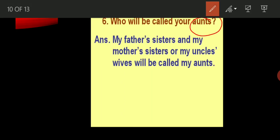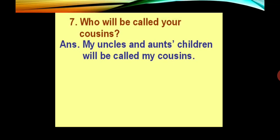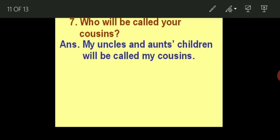The next one is who is your aunt? My father's sister, my mother's sister, or my uncle's wife will be called my aunt. Father's sister is also called bhua in Hindi, and in English it is also said as aunt. My mother's sister, that is masi, is also known as aunt. And my uncle's wife is also called my aunt. Now who will be called your cousins? My uncle and aunt's children will be called my cousins.